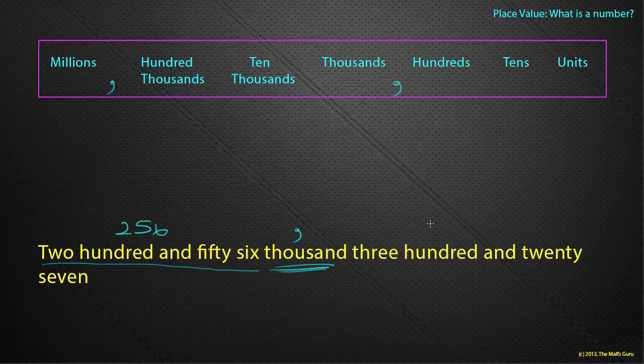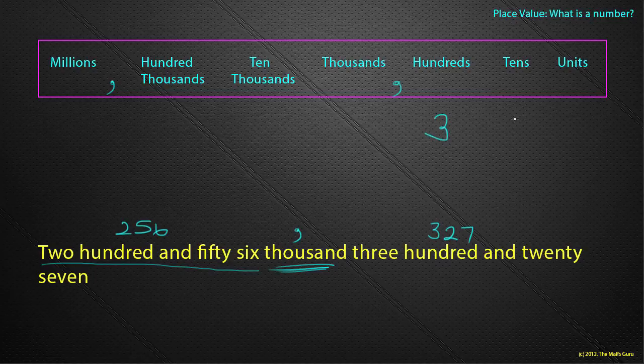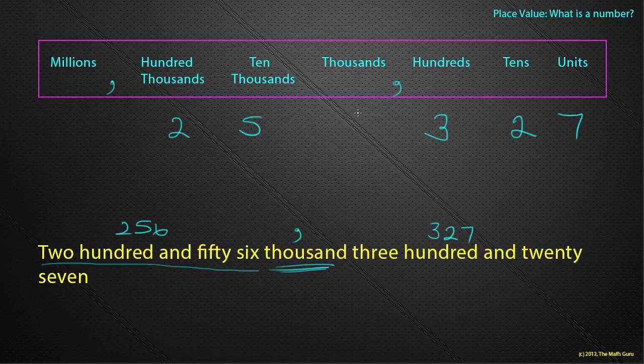What does three hundred and twenty-seven look like? Three hundred and twenty-seven. And there we go. I've got my comma. So, the number three hundred and twenty-seven goes there.